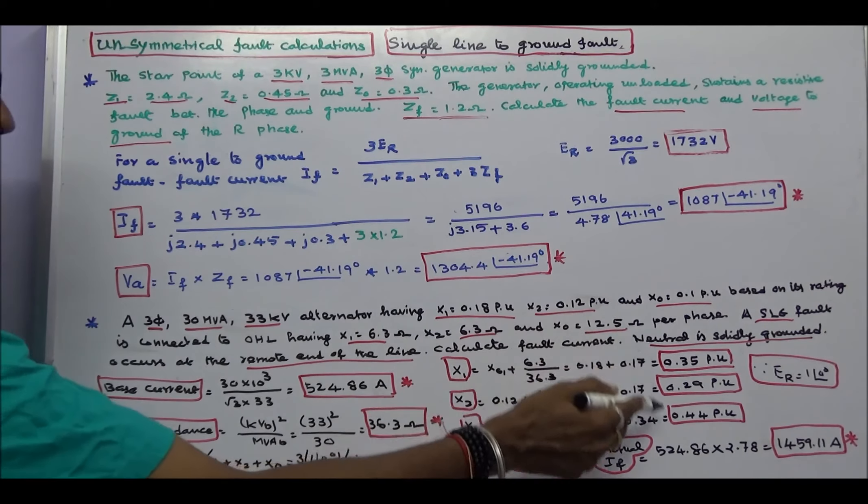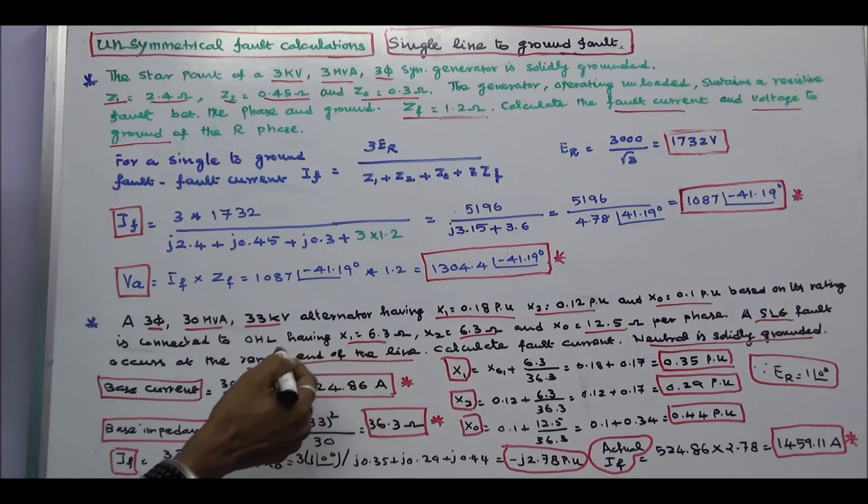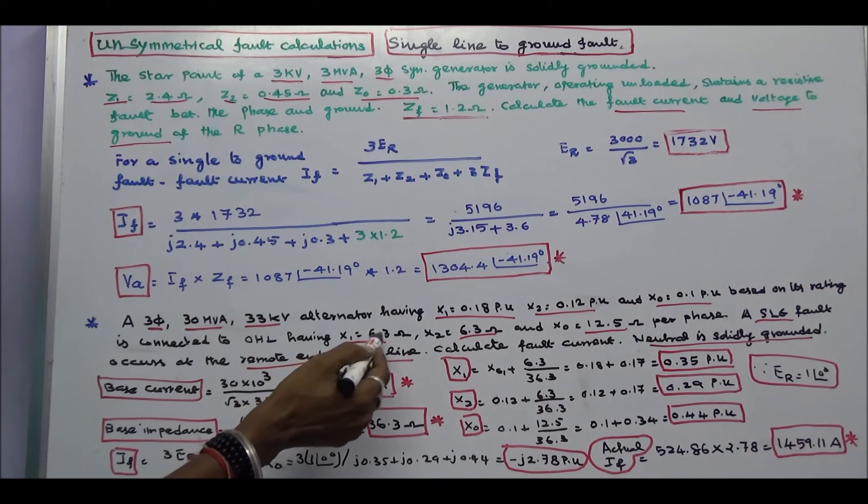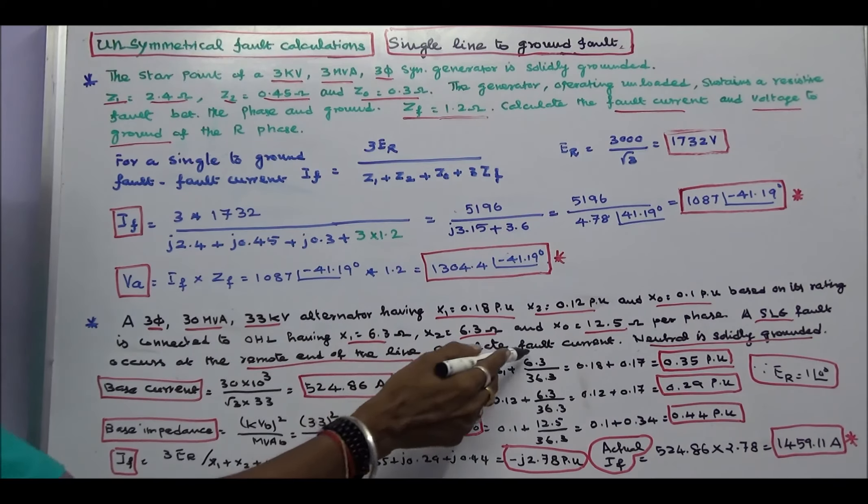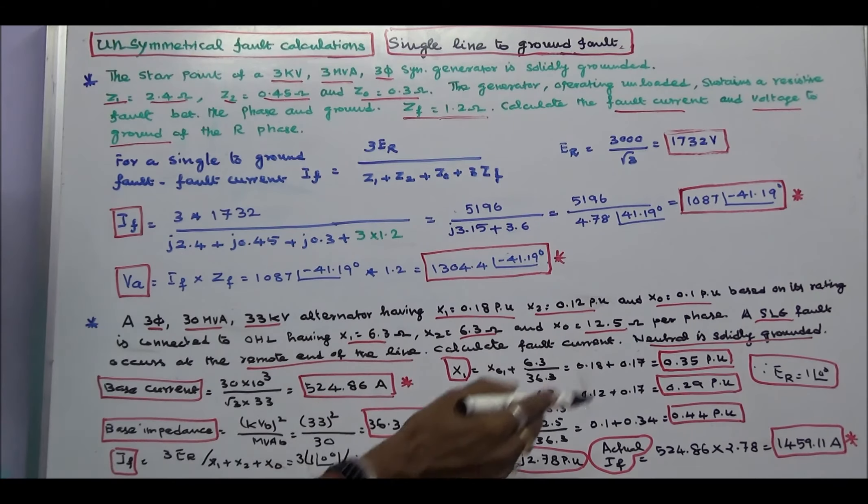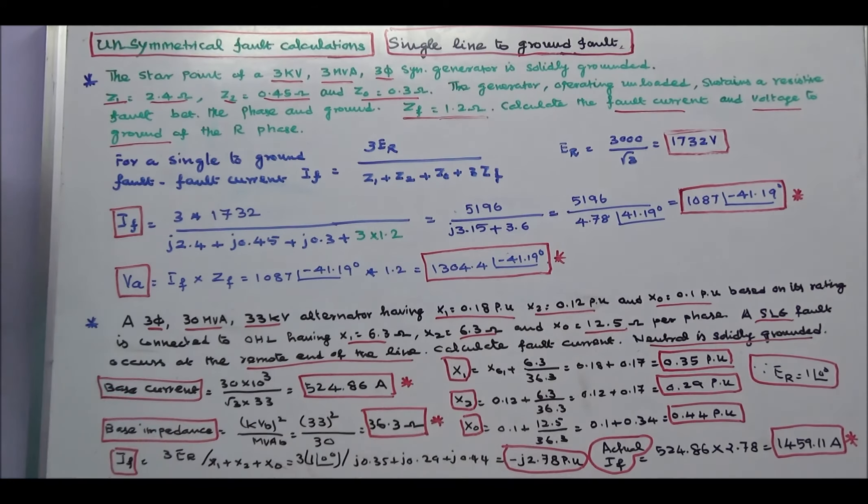Here all are in per unit. The line reactance values are in ohms. They convert into per unit value. That is the actual by base. Since ER is equal to 1.0, fault current IF is equal to 3 into ER divided by X1 plus X2 plus X0. 3 into 1.0 divided by J0.35 plus J0.29 plus J0.44.